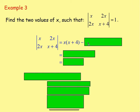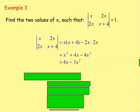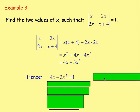You do x times (x plus 4), then take away 2x times 2x. Multiplying out the brackets and simplifying gives x squared plus 4x, take away 4x squared. The x squared terms combine to give negative 3x squared, so the determinant is 4x take away 3x squared.